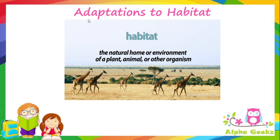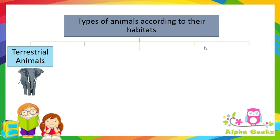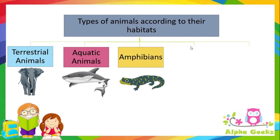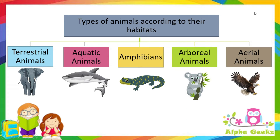Adaptations to habitat: a habitat is the natural home or environment of a plant, animal, or other organism. Types of animals according to habitat are classified into terrestrial animals, aquatic animals, amphibians, arboreal animals, and aerial animals.